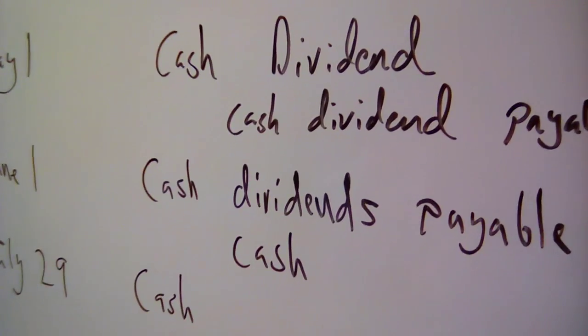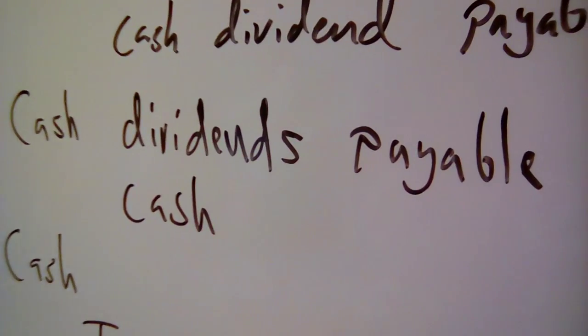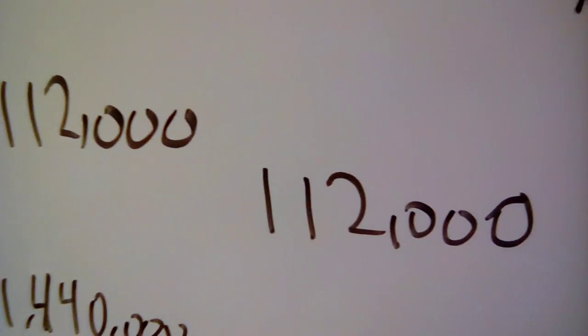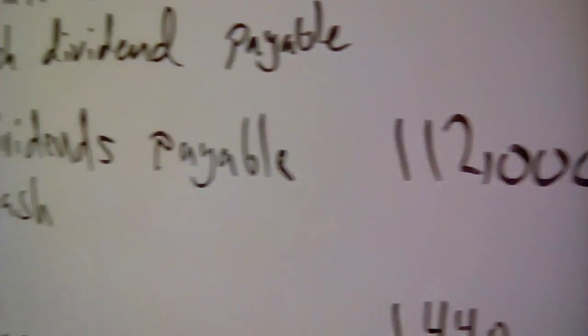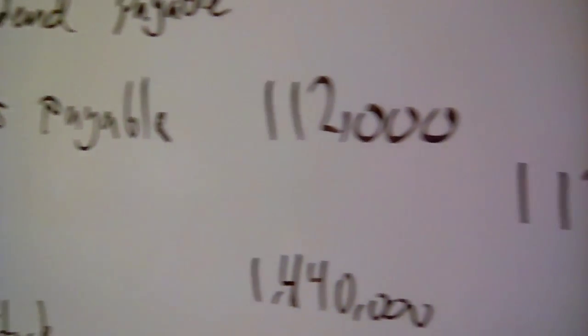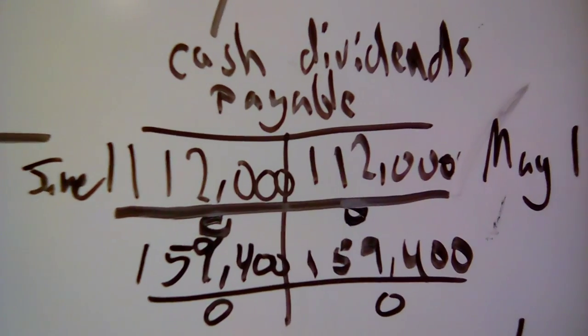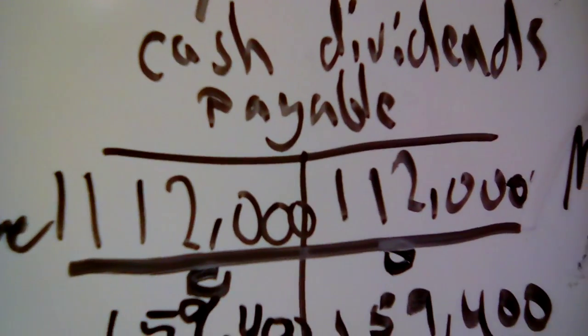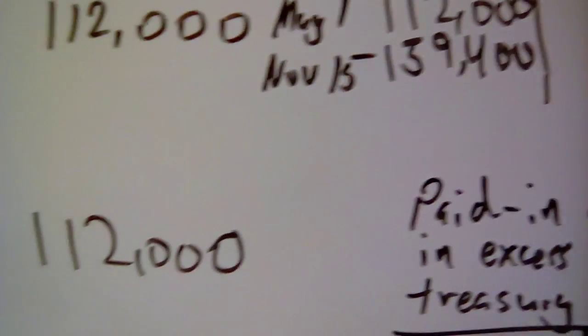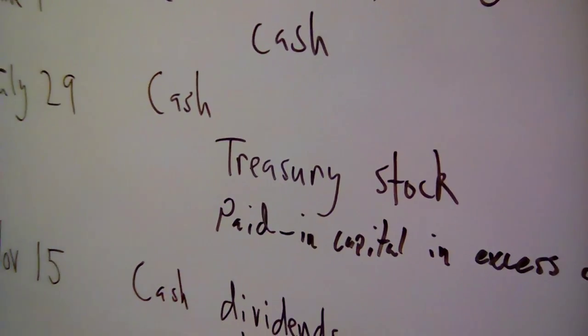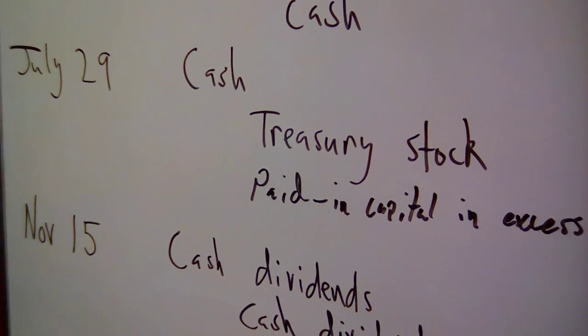So the next one is June 1st, we paid the cash dividend. So that's just simply debiting the payable, taking it off the books, and crediting the cash. It's going out the door. So debit the payable, credit the cash. And see right here, we debited the payable, which zeroes it out. I didn't bother making a cash T-account because it didn't give us a beginning balance and I didn't ask anything about cash.